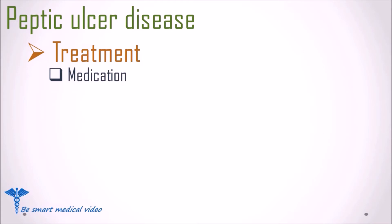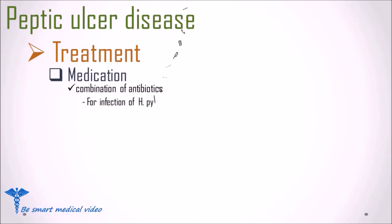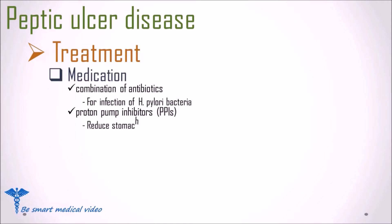Now we will discuss treatment of peptic ulcer disease. Many effective medications are now available. If the ulcer is due to infection with H. pylori bacteria, your doctor will usually prescribe a combination of antibiotics to kill the bacteria. If you don't have an H. pylori infection, your doctor will prescribe proton pump inhibitors, or PPIs, to help reduce stomach acid production. If the ulcer is mostly due to non-steroidal anti-inflammatory drugs, further steps are taken.